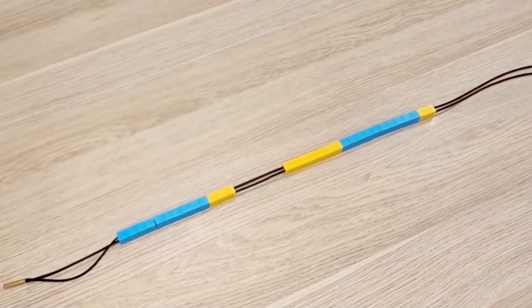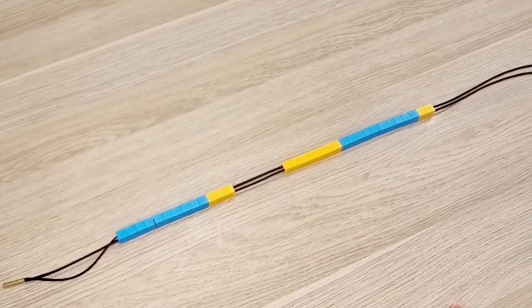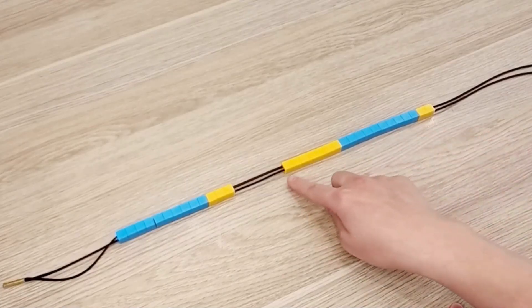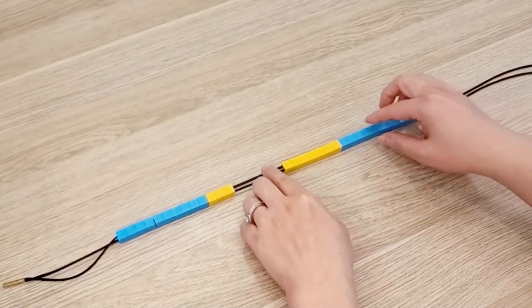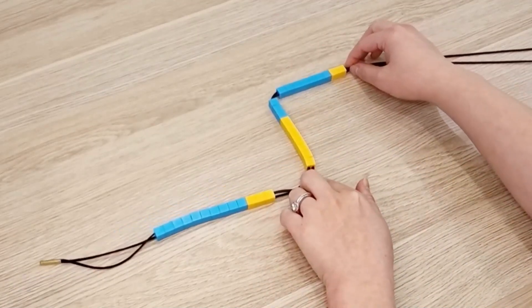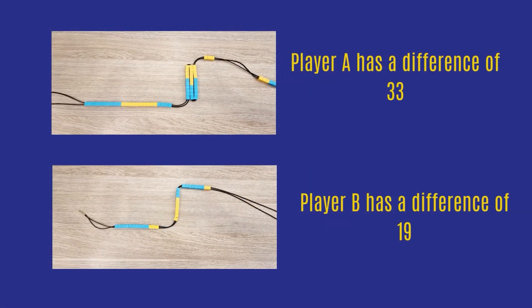Let's take a look at player B's results. We can see that they were comparing 32 to 13. To calculate the difference we can add 10 plus 7 plus 2, and when we use place value to fold the difference we can see that this is a total of 19. So player A and B would then compare their difference and the player with the larger difference will score a point. In this case player A has won the round — the first of five wins.